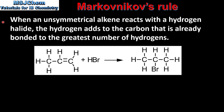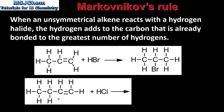So we've just looked at the explanation for Markovnikov's rule; now we'll look at the rule itself. When an unsymmetrical alkene such as propene reacts with a hydrogen halide, the hydrogen adds to the carbon that is already bonded to the greatest number of hydrogens. So when hydrogen bromide reacts with propene, the hydrogen atom will bond to the carbon already bonded to the greatest number of hydrogens, which is this carbon here. Therefore the major product is 2-bromopropane.